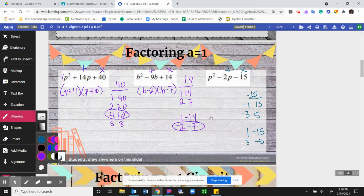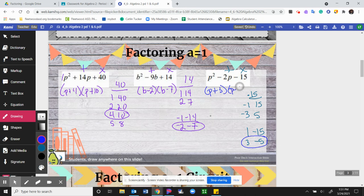So I need it to add up to a negative 2, okay? In order to get a negative 2 here, I need a 3 and a negative 5. So making that, that would be a P plus 3, and then a P minus 5.